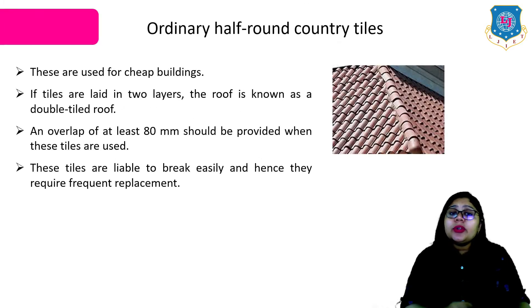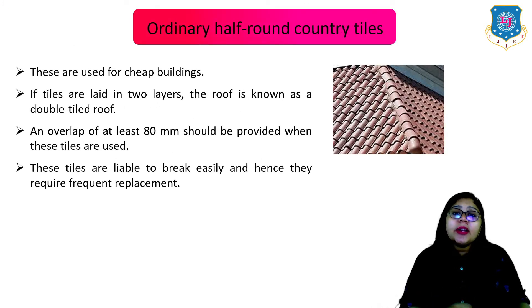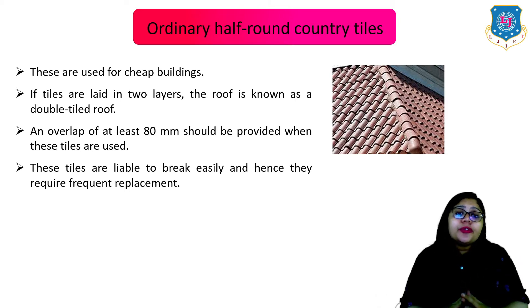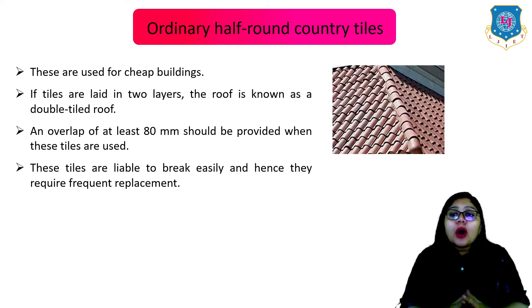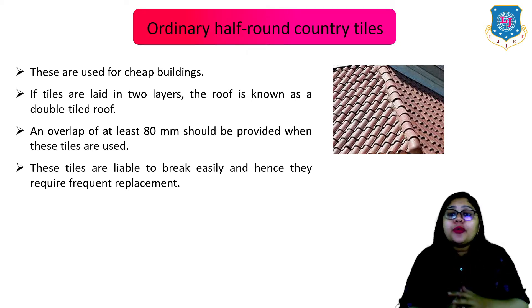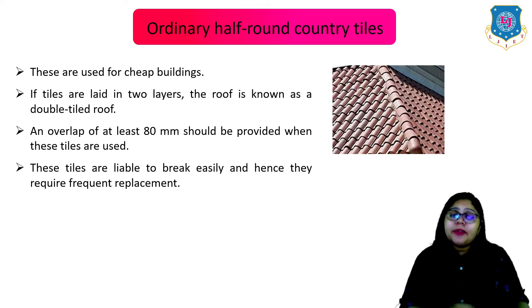Now let us move to the second type which is the ordinary half round country tiles. These are used for cheap buildings. If tiles are laid in two layers, the roof is known as the double tile roof. An overlap of at least 80 mm should be provided when these tiles are used. These tiles are liable to break easily and hence they require frequent replacement.